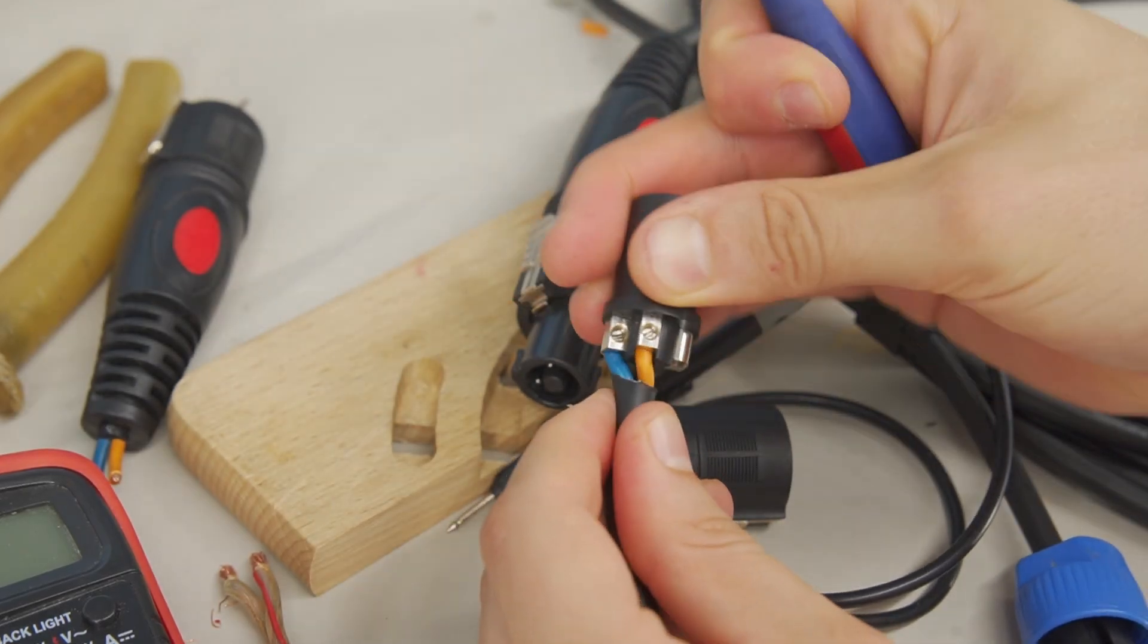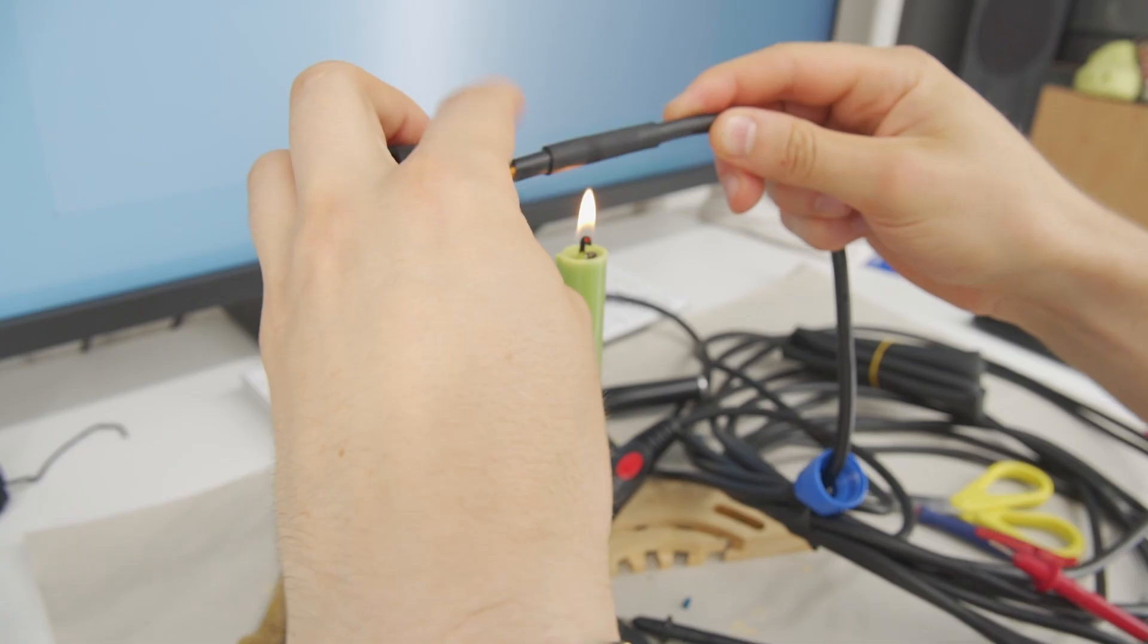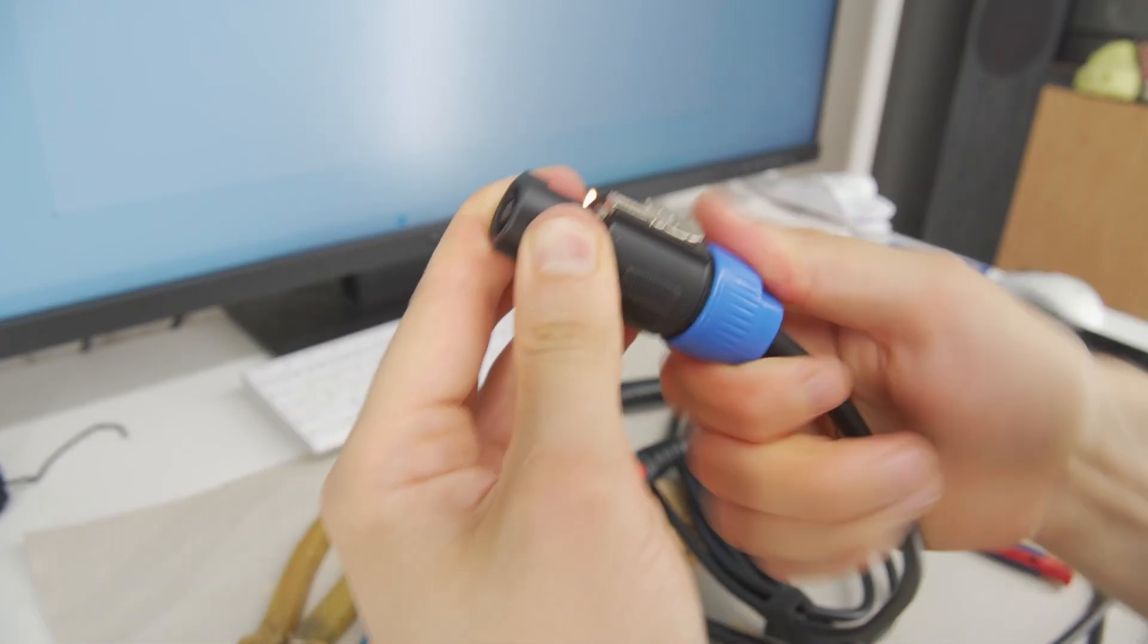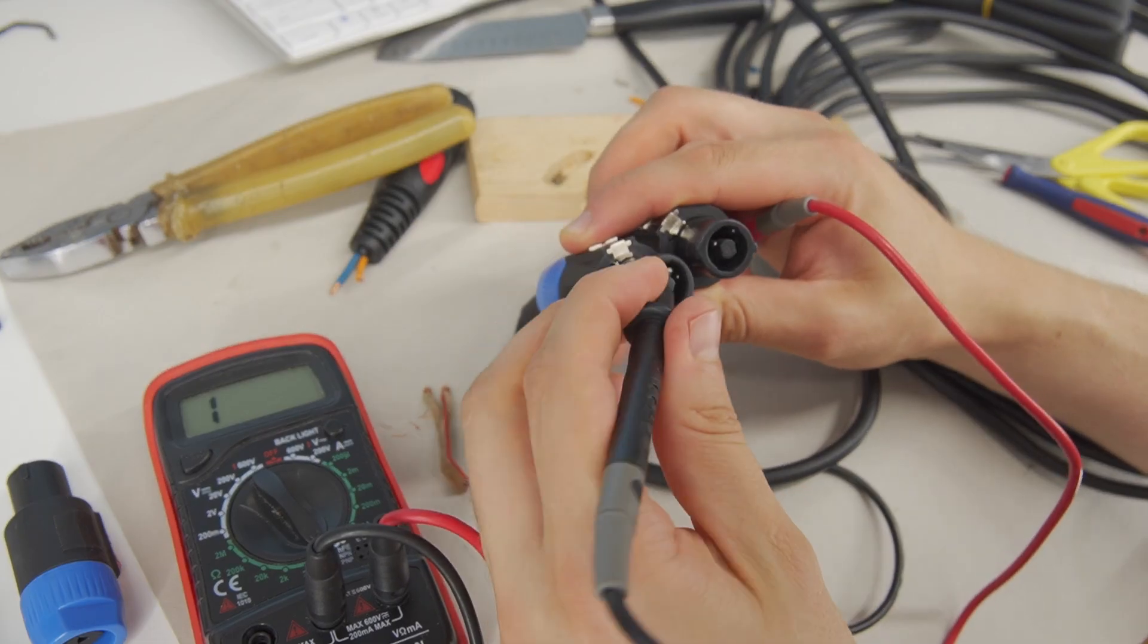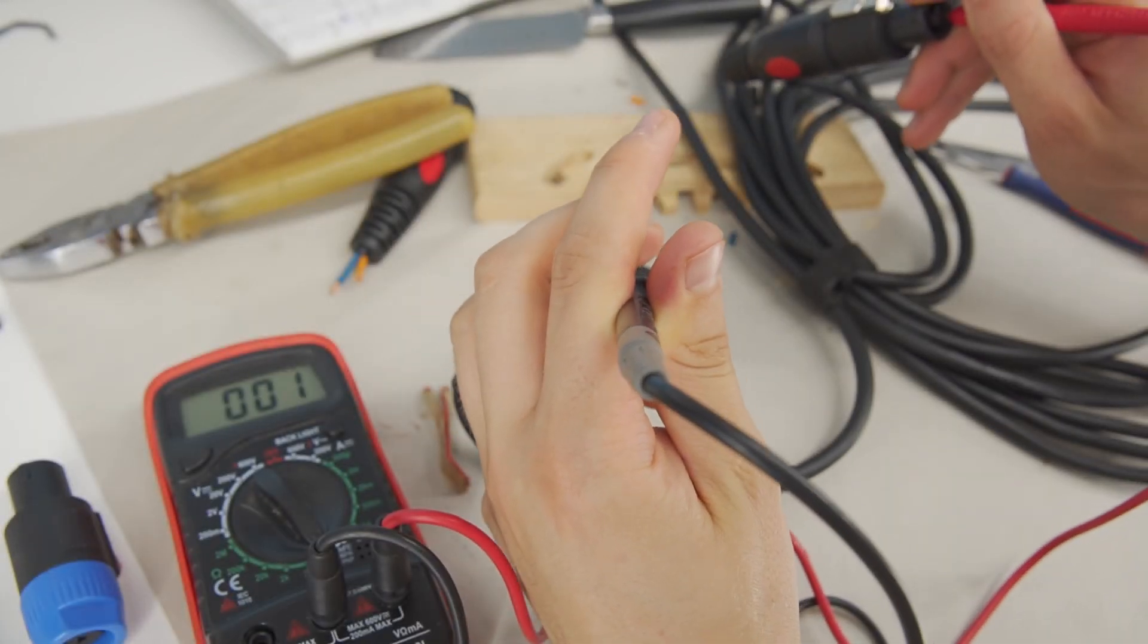Once the wires are secure, slide the heat shrink tubing over and attach it. Now assemble the SpeakOn connector. Always make a final check to ensure the wires are connected correctly.